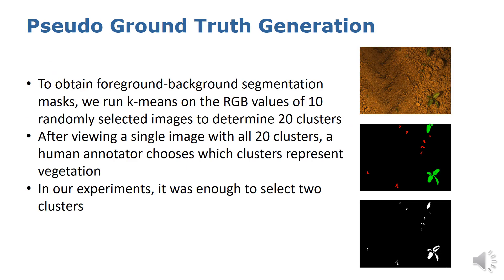The first step is to generate pseudo-ground truth that will be used to rank the samples. We found that a rough foreground-background segmentation is suitable for our application, which we obtained with a simple clustering method. We randomly sampled 10 images and ran k-means on the values of their RGB channels to obtain 20 clusters. After viewing a single image with all those clusters, a human annotator chooses which clusters represent vegetation. For the data in our experiments, two clusters were enough to obtain rough foreground masks.